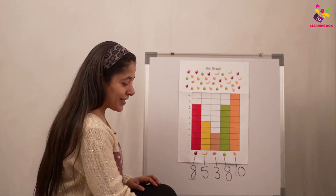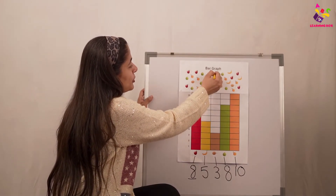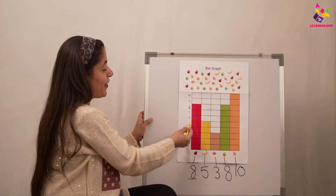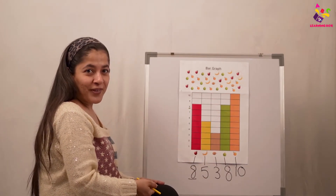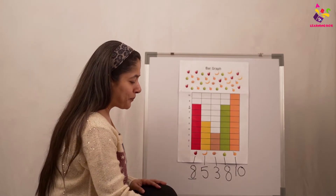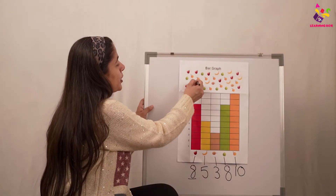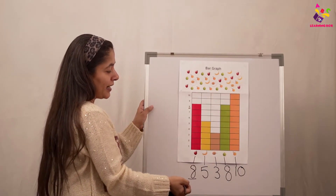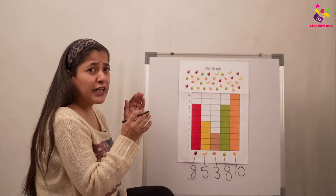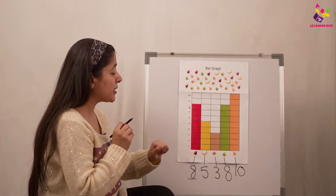Let's count the bananas — one, two, three, four, five. Five bananas, five boxes, we've written five. See how easily we collected the data without sitting and counting one by one, just counting the boxes quickly. Now the chikus — one, two, three. The number is three, three boxes, we've written three. Chikus are the least — there are no other fruits which are fewer than chikus.